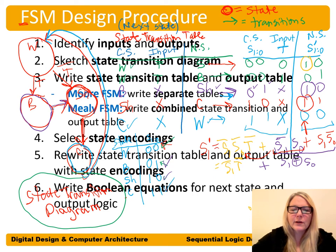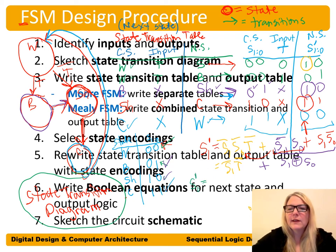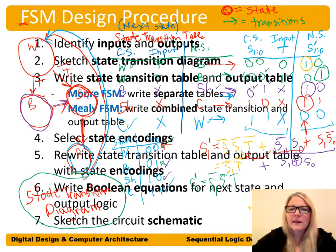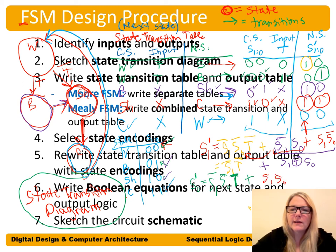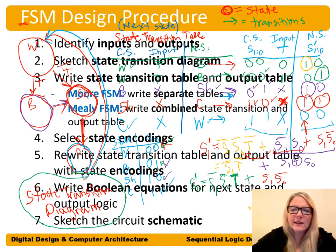Now let's write the equation for S0 prime (next state bit 0). S0 prime equals S1_bar · S0_bar · T (from the first one in the truth table), OR S1 · S0_bar (another place you get a one; T is a don't-care there). This simplifies to S0 prime = S0_bar · T + S1 · S0_bar.